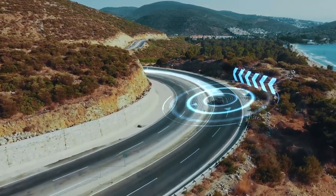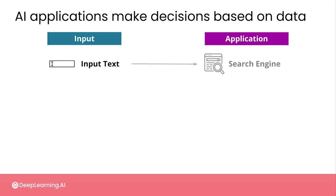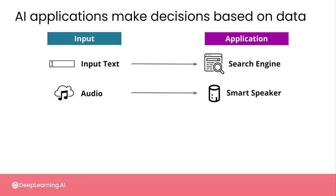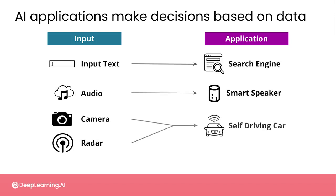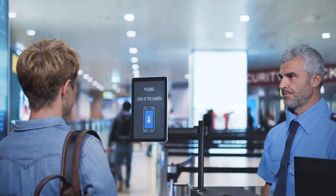Many new vehicles are now equipped with AI that can make driving safer, with automatic detection of when you're driving out of the lane or at risk of collision. What all these applications have in common is that they use an algorithm to make decisions or inferences based on data — input text like in a search engine, audio data like in a smart speaker, or multiple data sources like cameras, radar, and other sensors in a self-driving car.